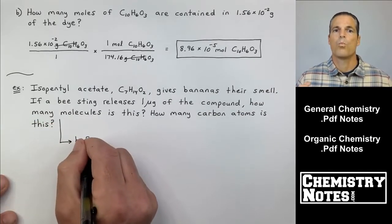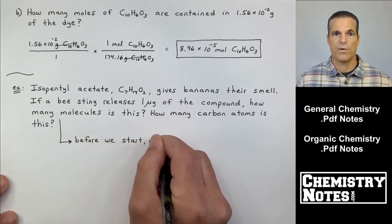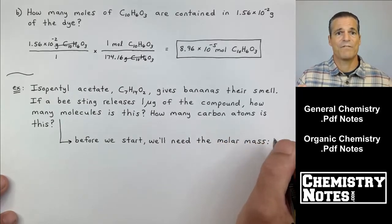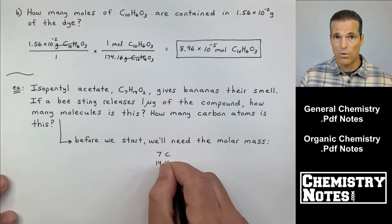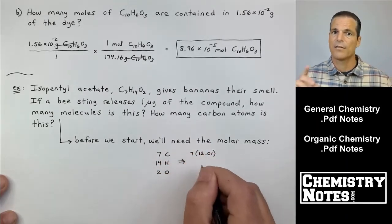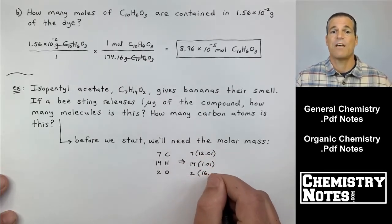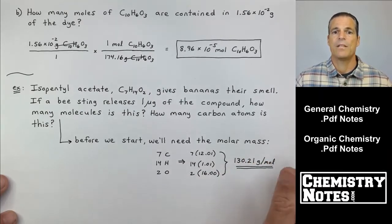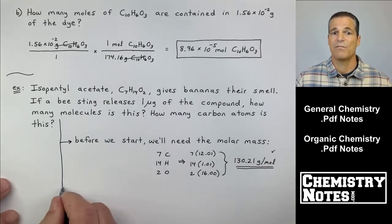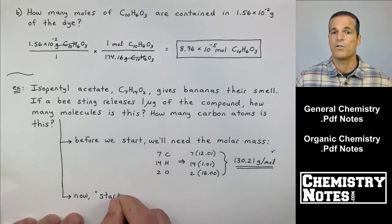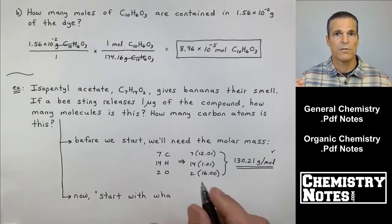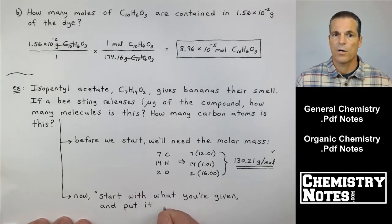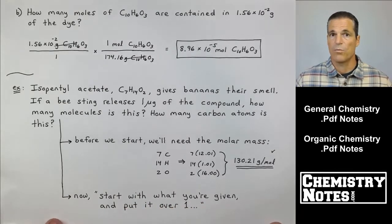First things first, one microgram. Do you remember that that's a metric conversion? We got to get from micrograms to grams, okay? And then once we get to grams, we have to use the molar mass to get to moles, and then from moles we're going to go to molecules. That's our plan. Can't do anything without the molar mass. Seven carbons, 14 hydrogens, two oxygens in the formula, right? Add up the individual atomic masses, multiply by seven for carbon, 14 for hydrogen, two for oxygen: 130.21 grams per one mole. That's the molar mass of isopentyl acetate.